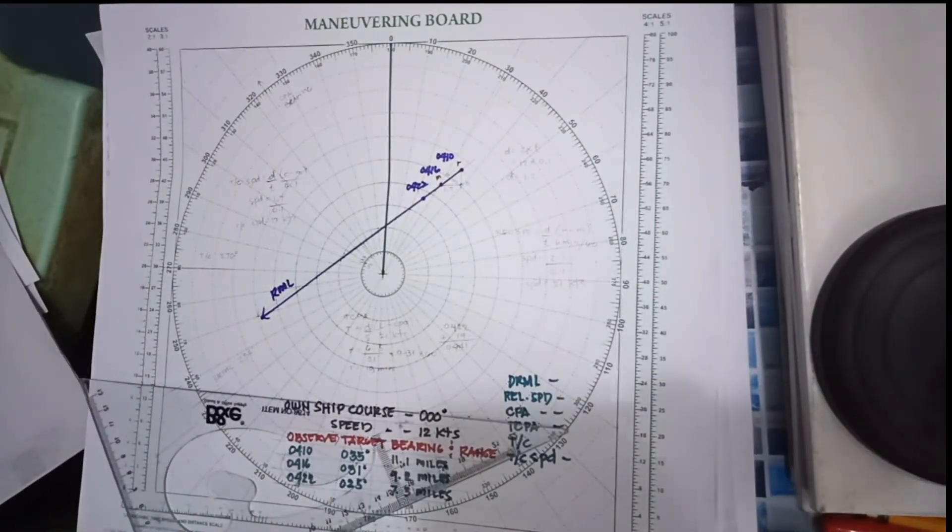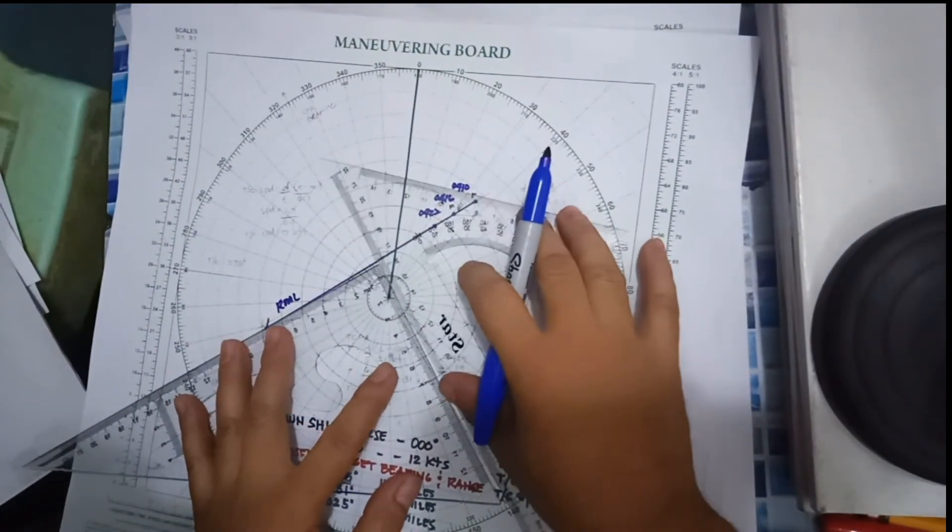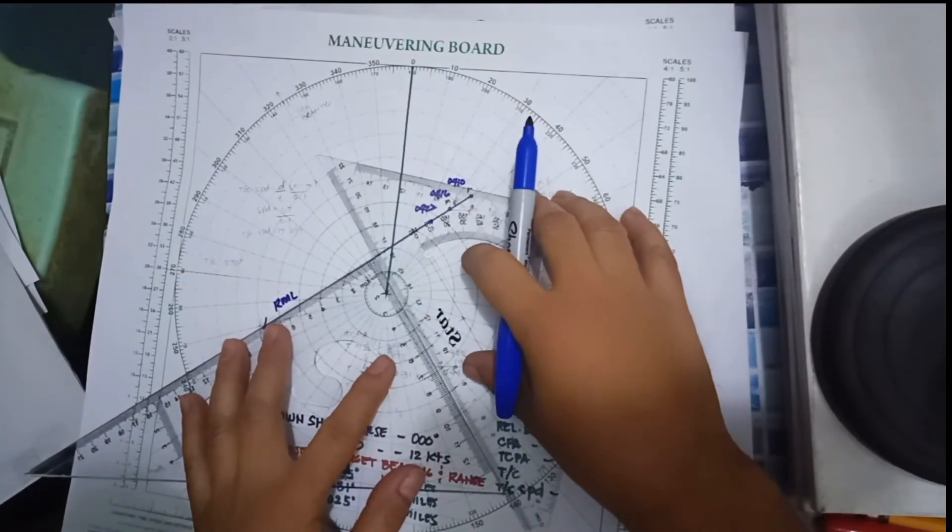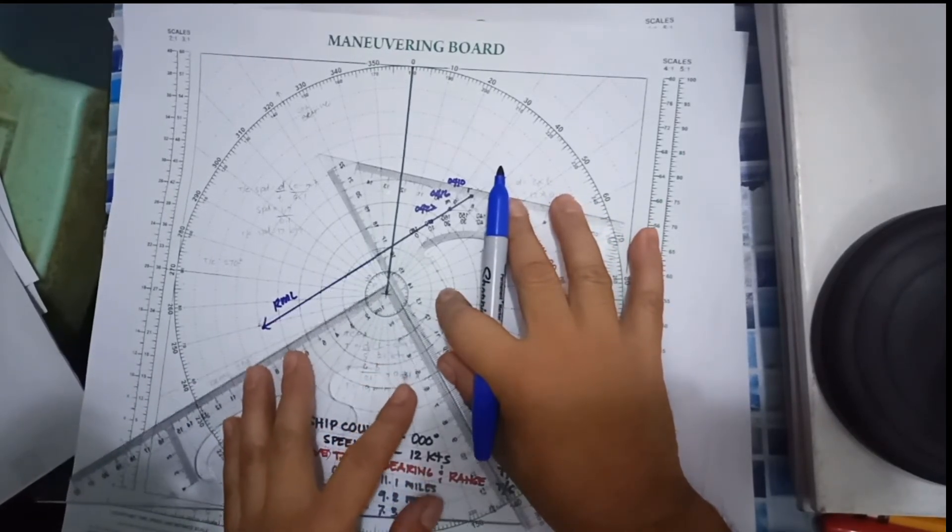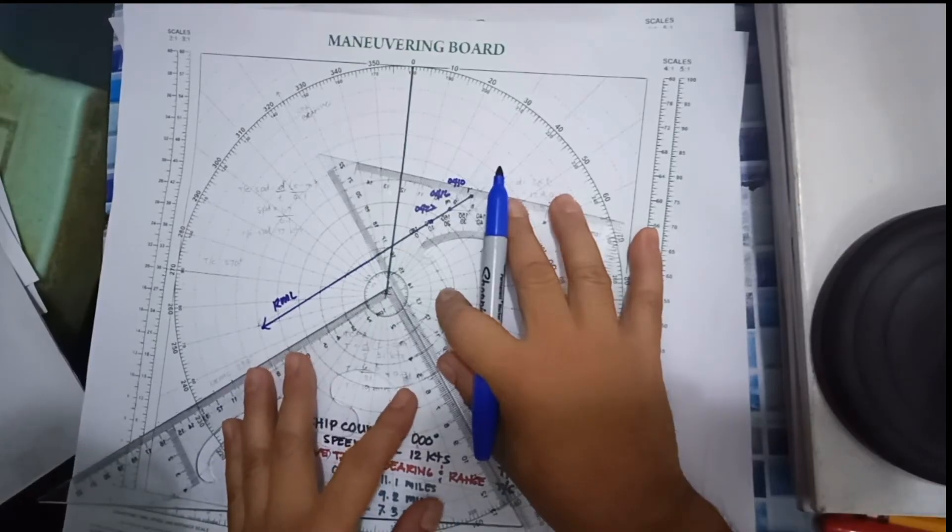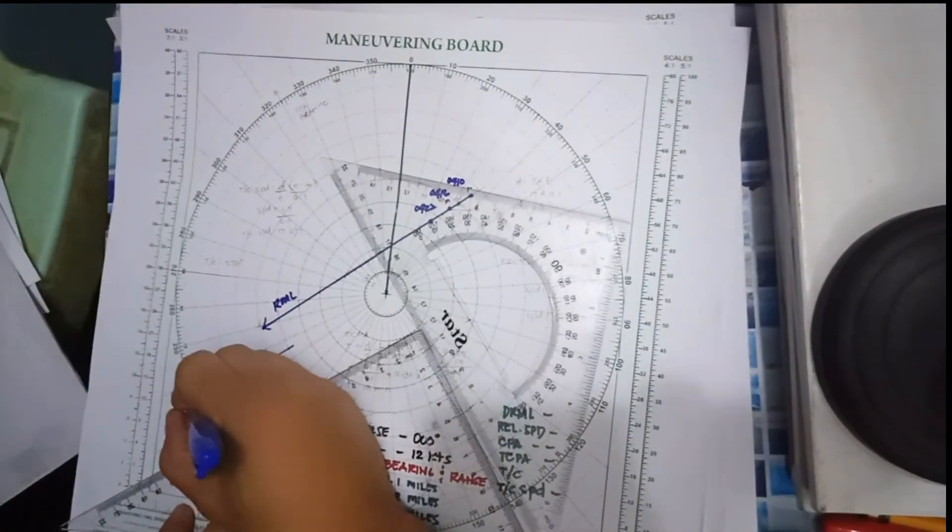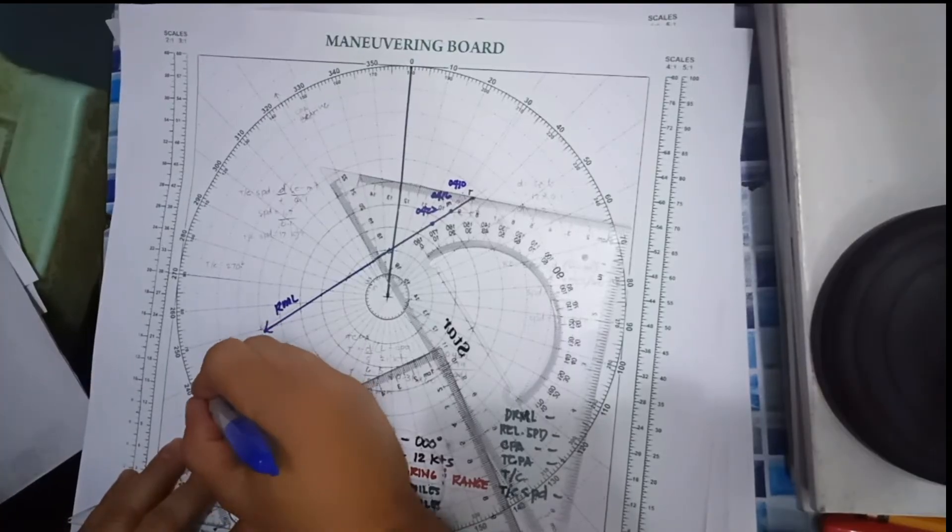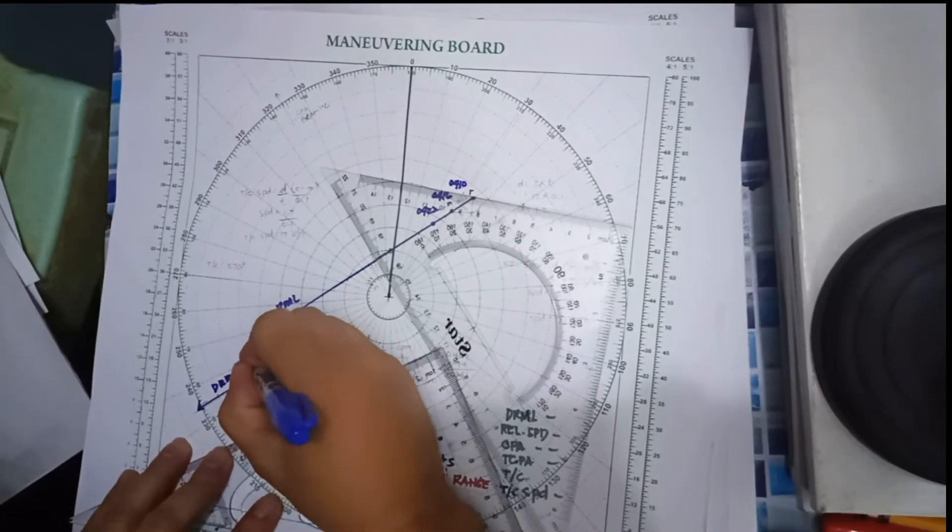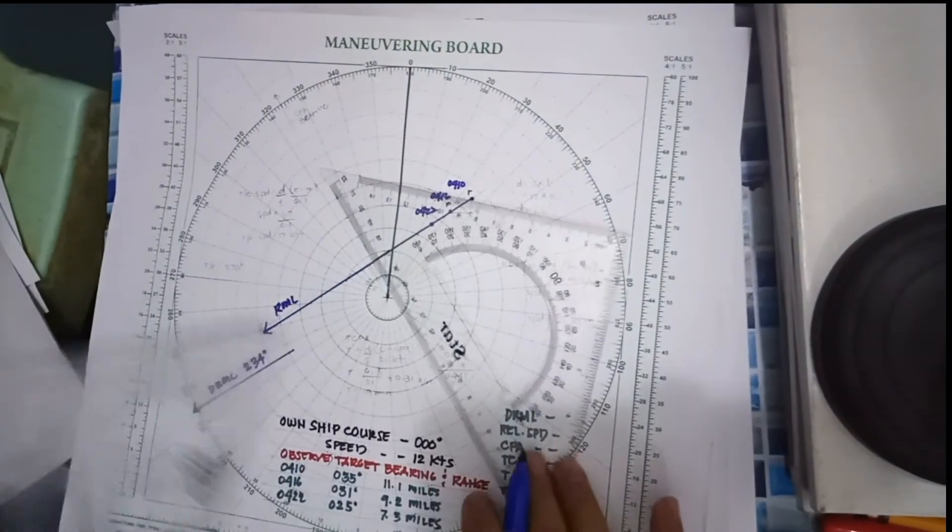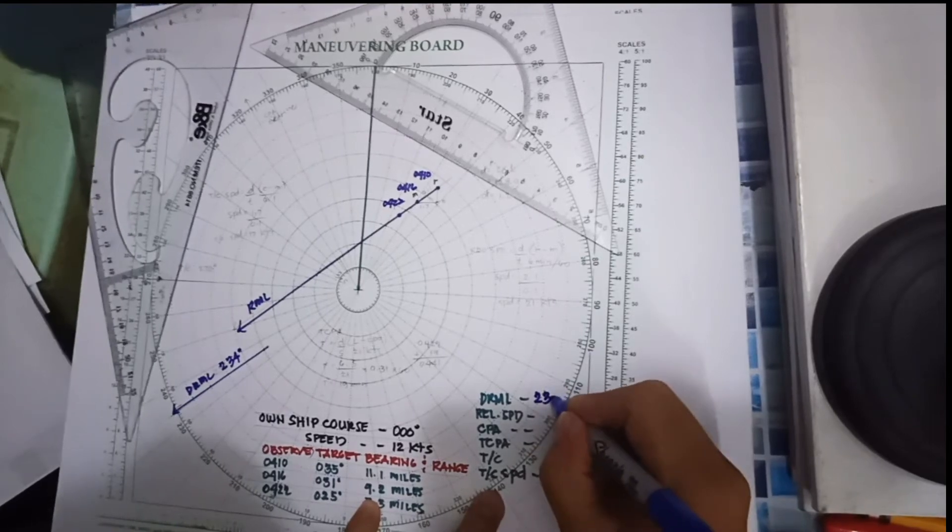Now we have to bring the RML to the center in order to get the direction of relative motion line. Let's bring it to the center. So we have now the DRML, 234 degrees.